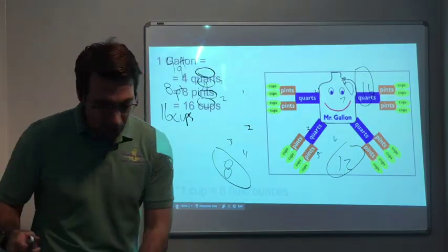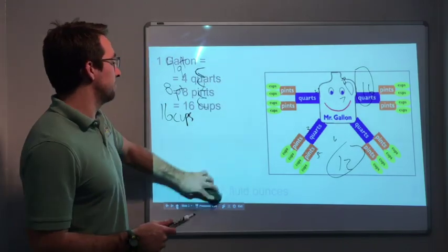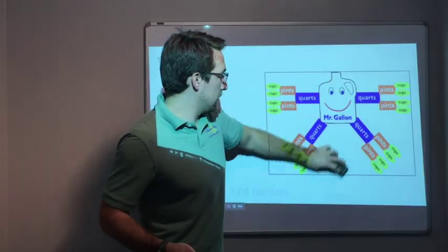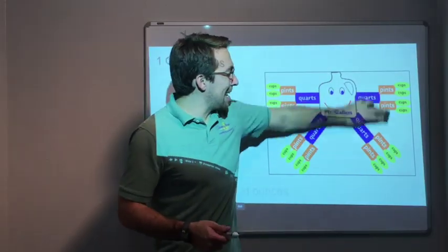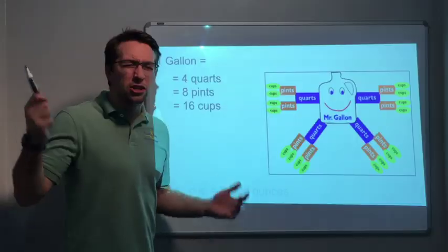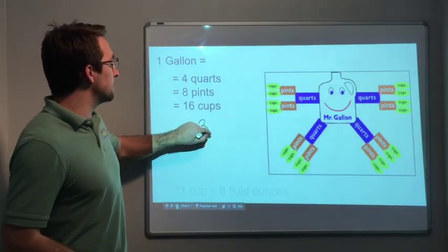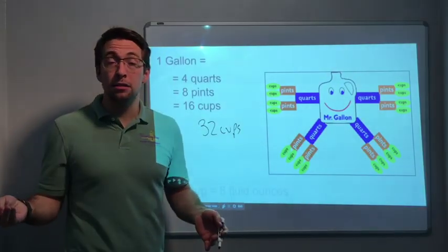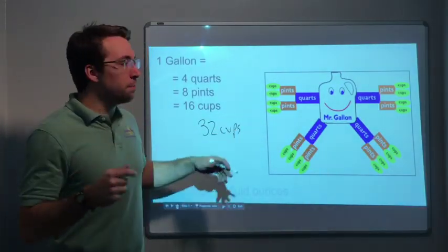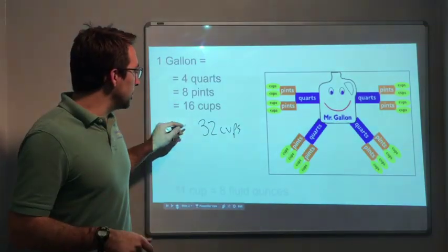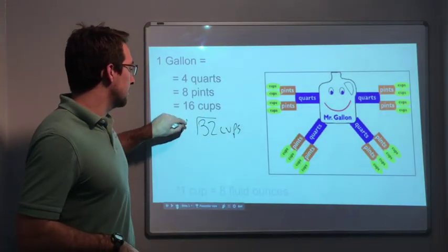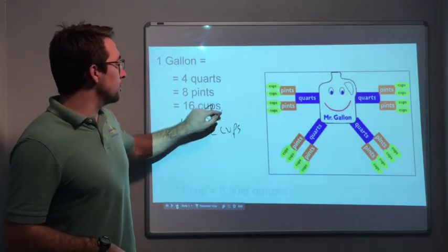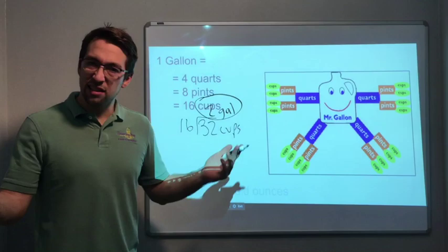So here we are, kind of just went through that. If you have 32 cups, how many gallons do you have? Well, there's 16 cups in one gallon, so what's 32 divided by 16? 16 times 2 is 32. Ah, 32 cups equals two gallons. That's awesome.